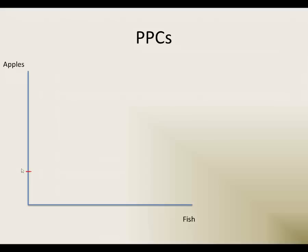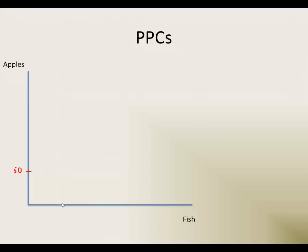So here I am. I can pick 50 apples in a day if I don't catch any fish — that's at this point right here. Next, I could catch 50 fish if I did not pick any apples. So if we combine these right here, we get my PPF. Now Bill — he could pick 200 apples in a day if he doesn't catch any fish, or he could catch 100 fish if he doesn't pick any apples. So let's pretend that connects, and this is O'Brien's PPF.